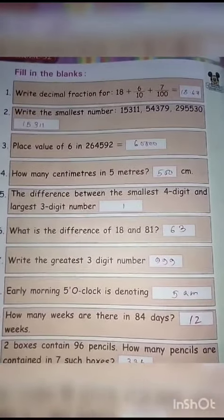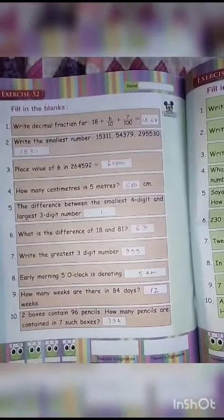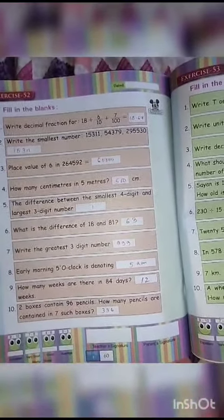between the smallest four-digit and largest three-digit number: 1. What is the difference of 18 and 81? 63.